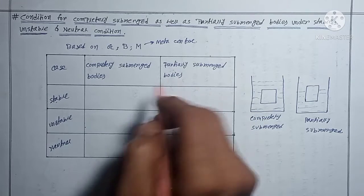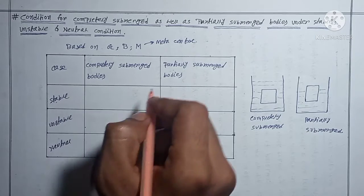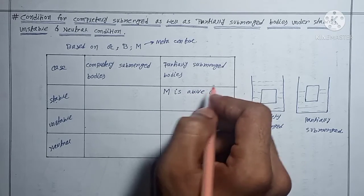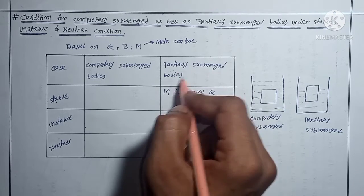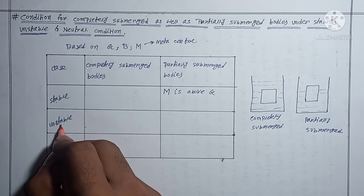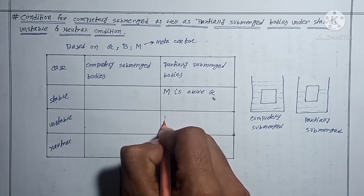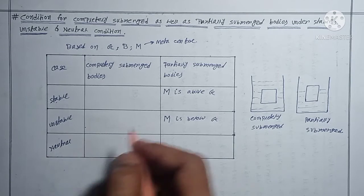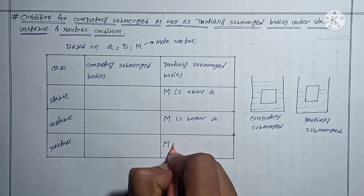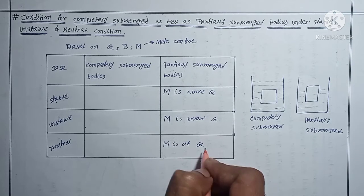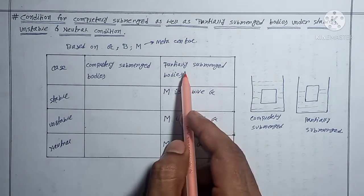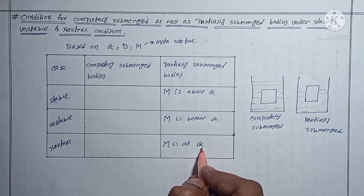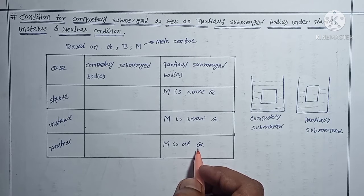For partially submerged bodies: for stable condition, M (metacenter) is above G (center of gravity). For unstable condition, M is below G. For neutral condition, M is at G — meaning M and G coincide with each other. To recap: stable → M above G; unstable → M below G; neutral → M at G.